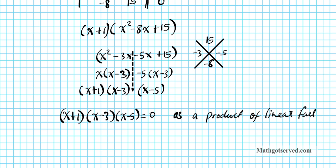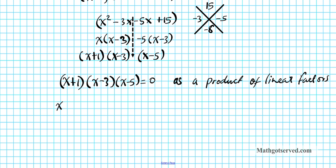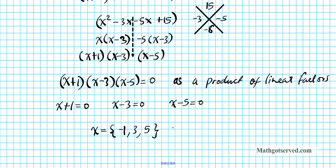So this is the original problem written as a product of linear factors. Now let's find the zeros using the zero product property. We set each factor equal to zero: x plus 1 equals 0, x minus 3 equals 0, and x minus 5 equals 0. Solving each gives x equals negative 1, x equals 3, and x equals positive 5. So these are your zeros or roots.